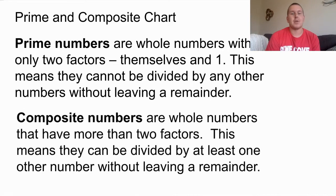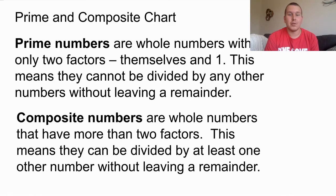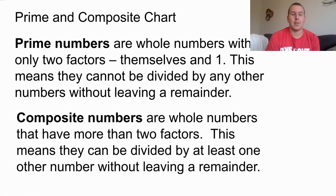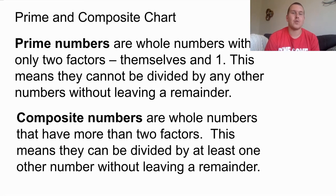Composite numbers are whole numbers that have more than two factors. This means they can be divided by at least one other number without leaving a remainder. So composite numbers are a little bit more flexible — there's at least one more number that it can be divisible by.